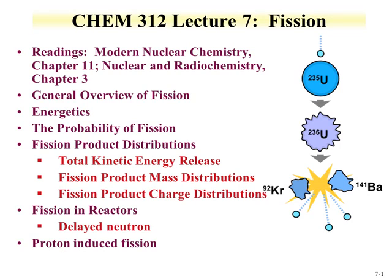This is Lecture 7 for Chem 312. This lecture is on fission. Its topics are covered in Modern Nuclear Chemistry Chapter 11 and Nuclear Radiochemistry Chapter 3. This lecture will provide an overview of fission, discuss energetics as they relate to fission, fission probabilities, and issues related to fission product distribution.